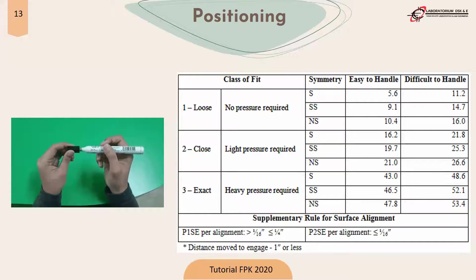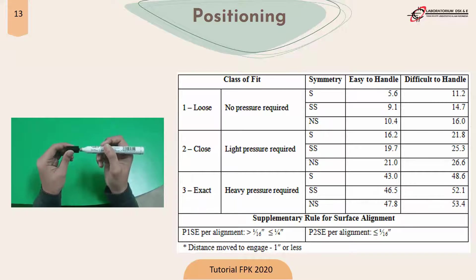A supplementary rule for surface area applies only as an edge when analyzing. For example, if the TMU code obtained is P1SE, then the surface is more than 16 inches or less than 4 inches. An example of how to write the code: P1SE means P for position, 1 for loose, S for symmetry, and E for easy.